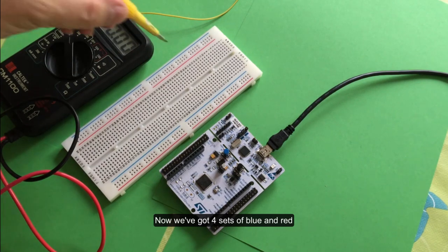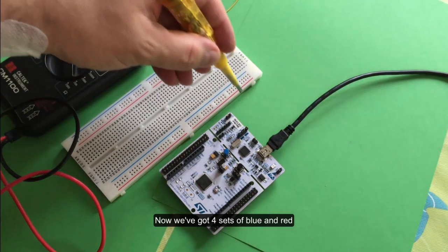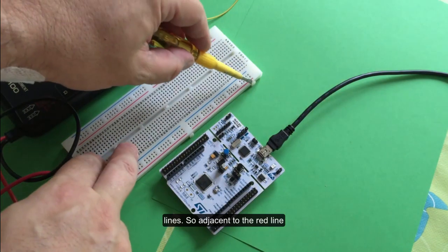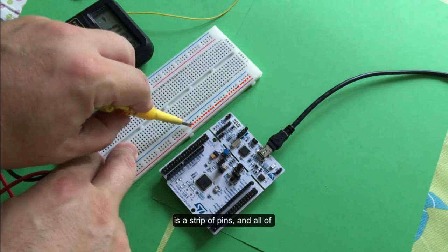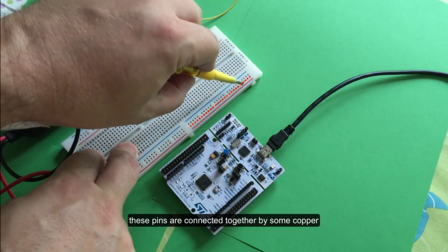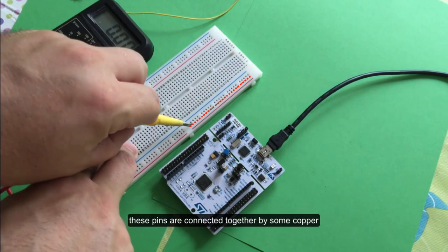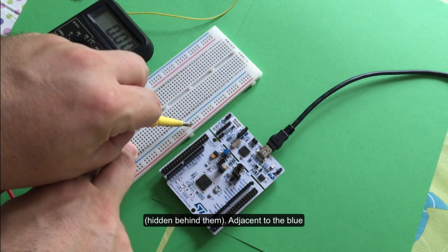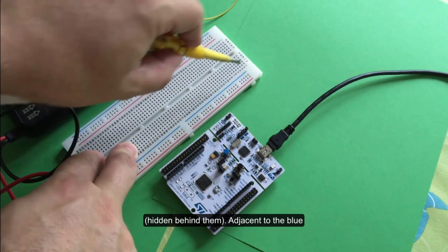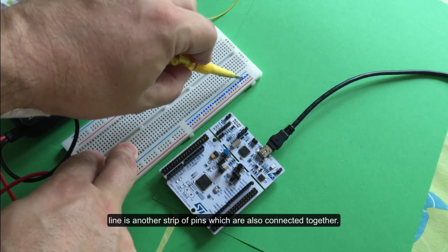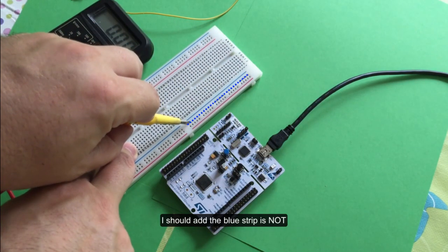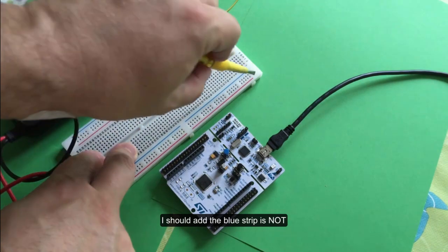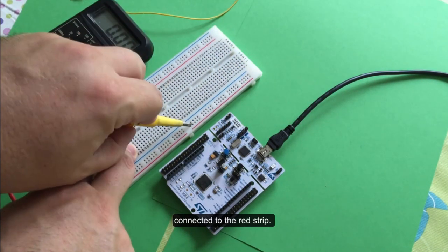We've got four sets of blue and red lines. Adjacent to the red line is a strip of pins, and all of these pins are connected together by copper behind them. The same way, adjacent to the blue line is another strip of pins which are also connected together. The blue strip is not connected to the red strip.